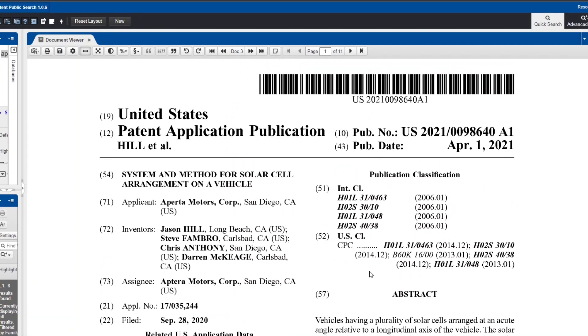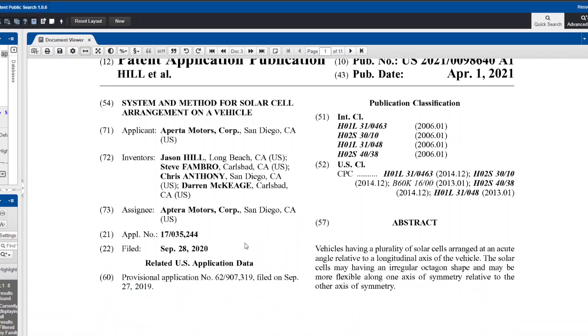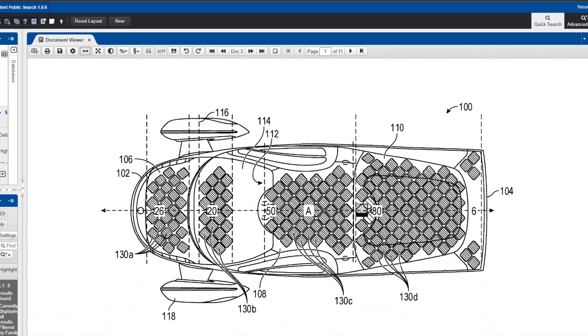A few days ago, we talked about this patent application that Aptera filed back in September of 2020. And this is talking about putting the solar cells, arranging them at a diagonal, 45 degrees off the longitudinal axis of the vehicle.